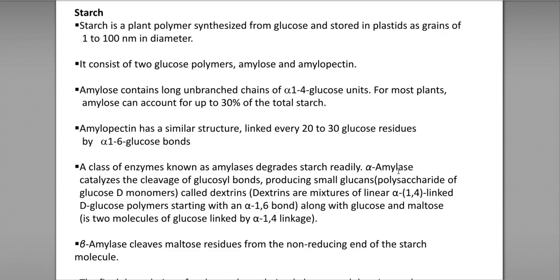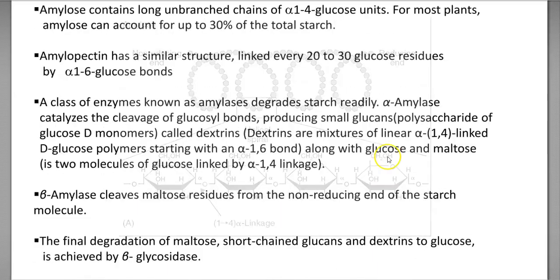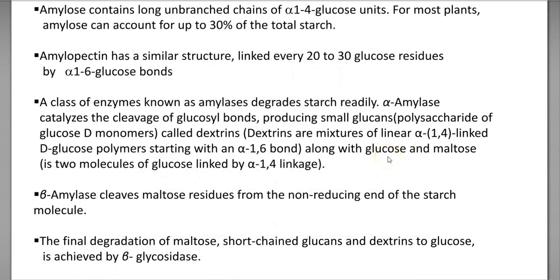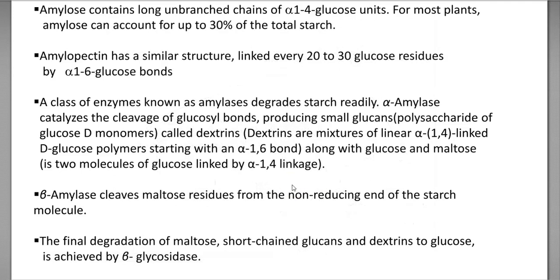Amylose contains long unbranched chains of alpha-1,4 glucose units. In most plants, amylose accounts for 30% of the total starch. Amylopectin has a similar structure but is linked at every 20 to 30 glucose residues by alpha-1,6 glycosidic bonds.